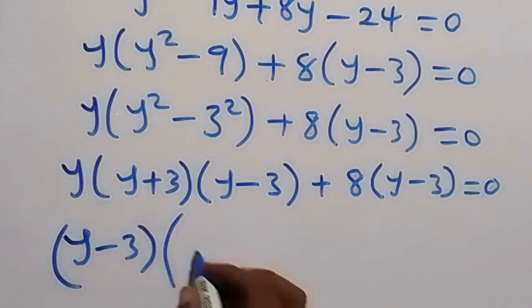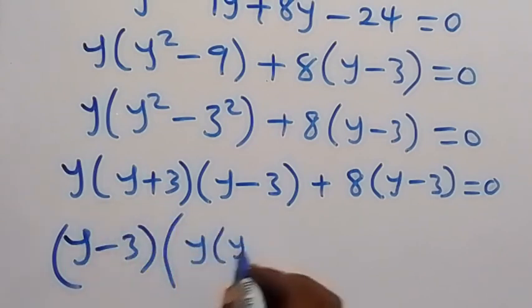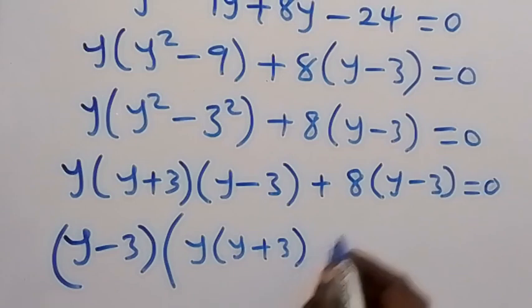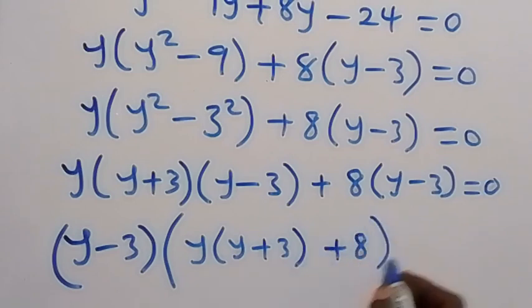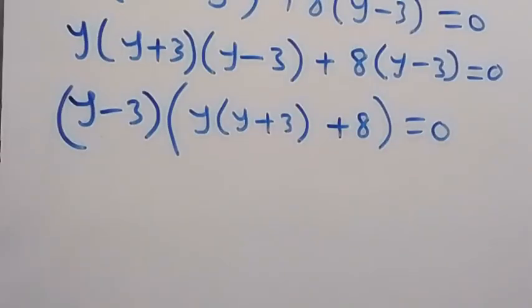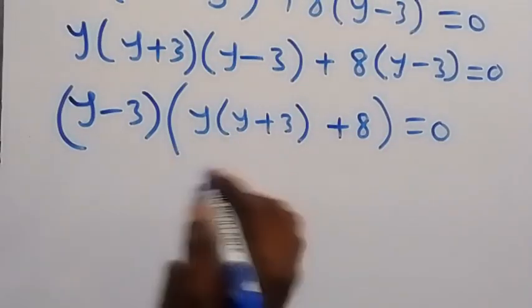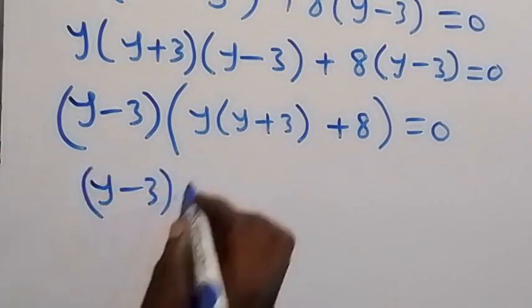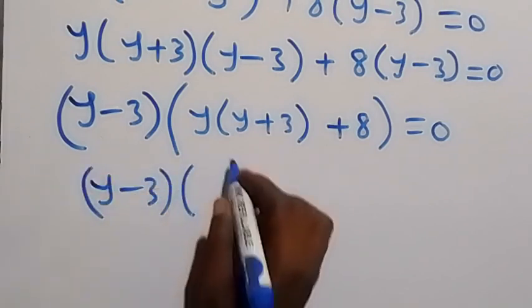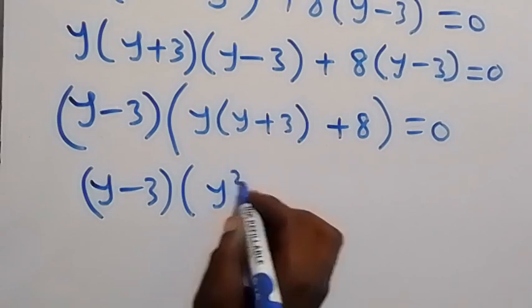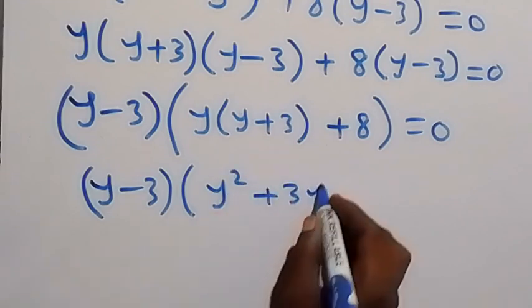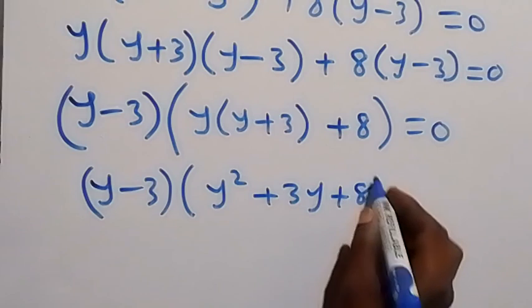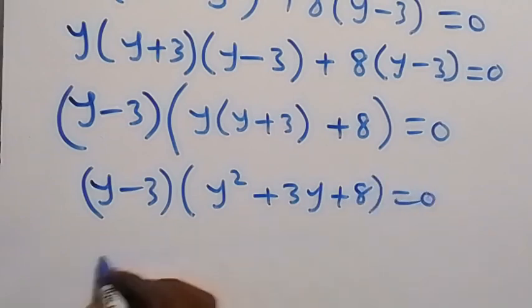From here, y minus 3 is common — we factor it out. We have y minus 3 multiplied by the bracket: y(y + 3) plus 8, which equals zero. Opening that bracket gives us (y − 3)(y² + 3y + 8) equals zero.